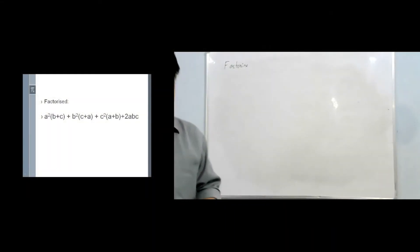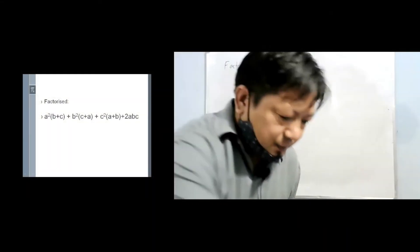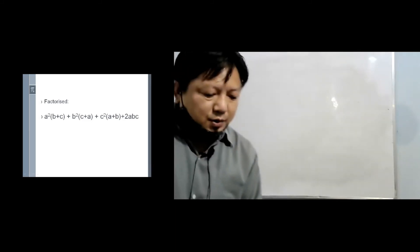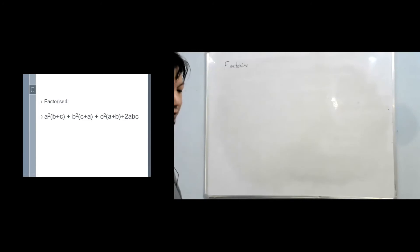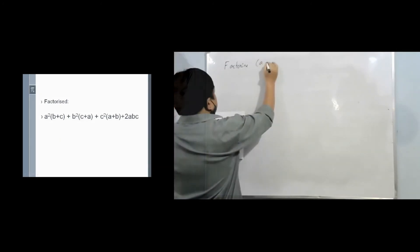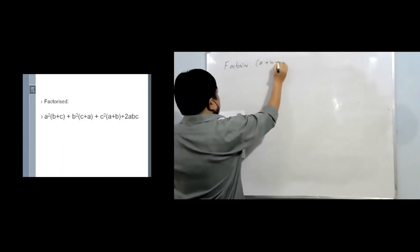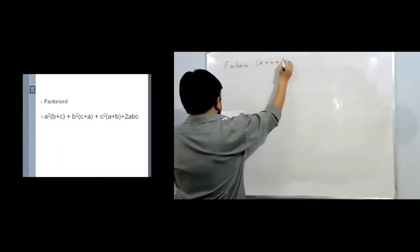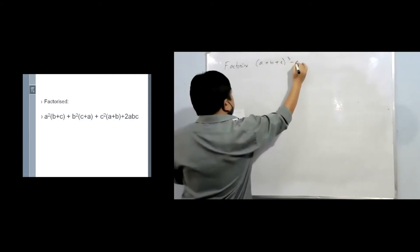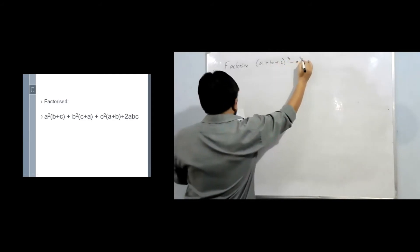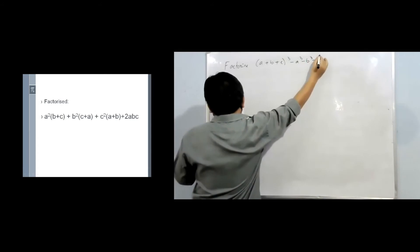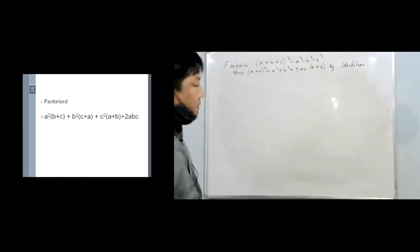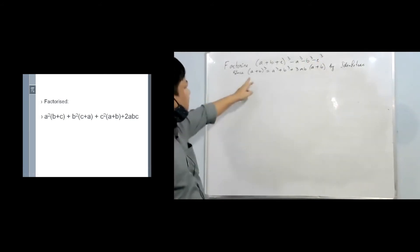To understand it better we need two or three more questions, but let me do one more and give you some assignment. The second example: factorize (a + b + c)³ − a³ − b³ − c³. By identity, we know that (a + b)³ = a³ + b³ + 3ab(a + b).